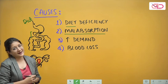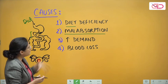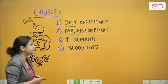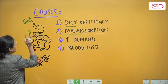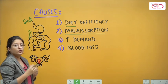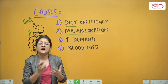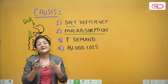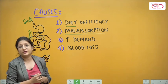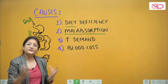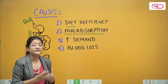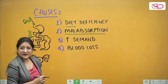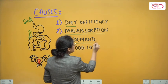Malabsorption is another cause — even if you maintain a good diet, iron is absorbed from the duodenum and upper jejunum, and if there is a chronic intestinal condition leading to malabsorption of all nutrients, then malabsorption of iron can also take place. Increased demand is another very important cause — there are certain time periods in life where naturally the demand for iron is increased by growing tissue.